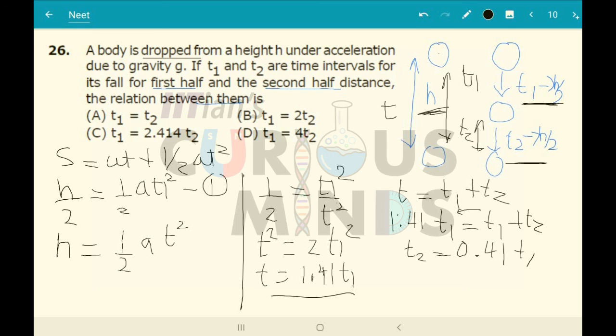Here the ratio is asked, the relationship between t₁ and t₂. So t₁ will be t₂ divided by 0.41. If I calculate the value, the answer will be roughly equal to 2.4, which is option C. So the correct option will be option C.